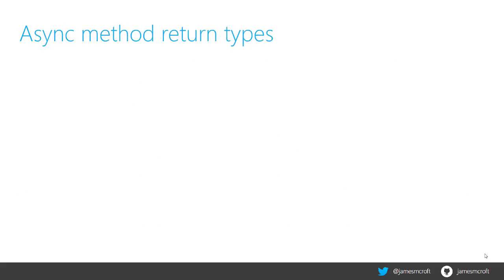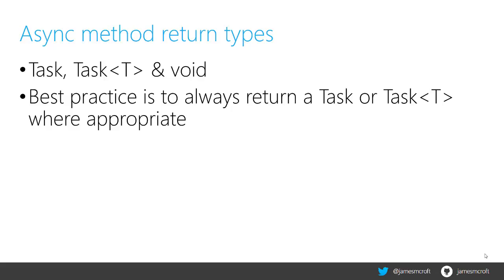So what method return types are available for async? There are three: task, a generic task so you can return a type of object, and void. You've probably heard people say that you should always return a task, and that's technically true, but there are occasions where it just isn't possible. The best practice is always to return a task — so where you might be returning void, return a task, or if you're returning an object, return a task of that type where appropriate.